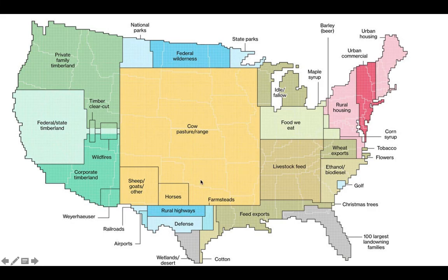That's pretty much all for today. Looking ahead, we're going to start thinking about how the United States uses their land — whether we're using it for cow and pasture range, for growing feed for pastures, for national parks, federal wilderness, state parks, etc. What are we using the land for in the United States? We'll start talking about that next class to break down how we use our resources and whether we're using them sustainably. If you've got questions, let me know. I'll see you next time.